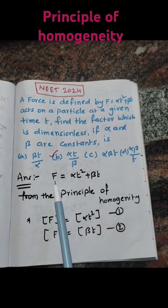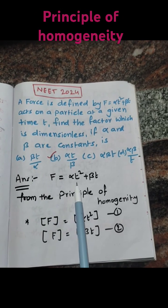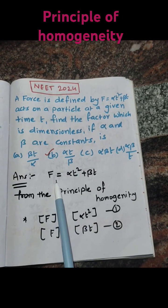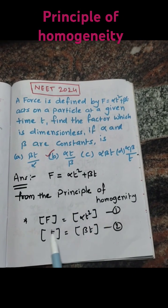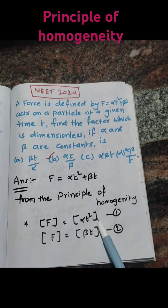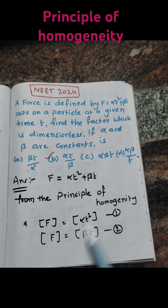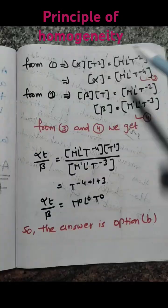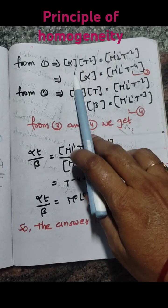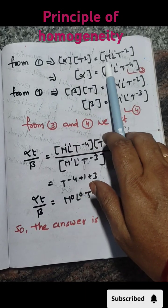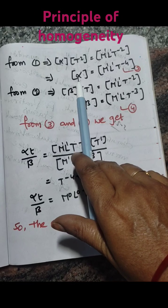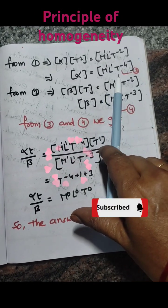From this principle we can write: the dimensional formula for force equals the dimensional formula for alpha t squared — let us take this as equation 1. From equation 1, alpha into t squared equals M power 1, L power 1, T power minus 2. Solving this, alpha equals M power 1, L power 1, T power minus 4.